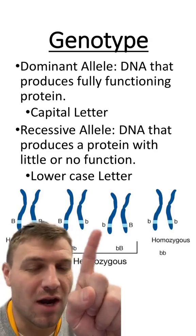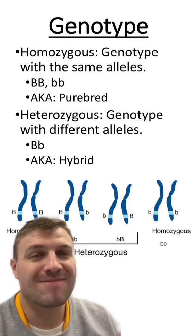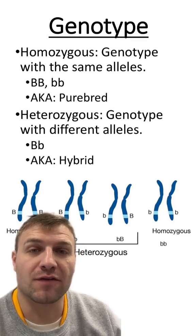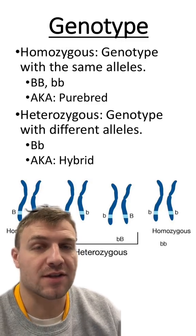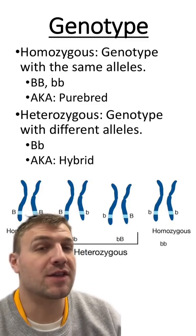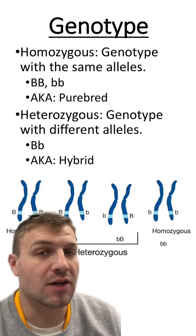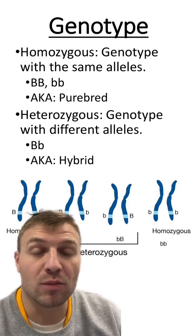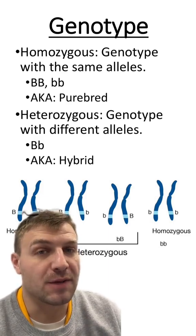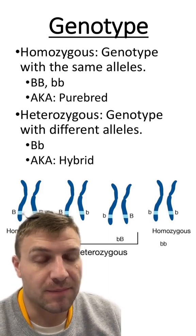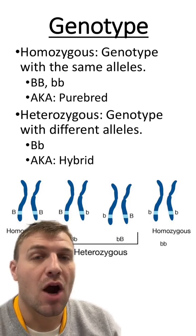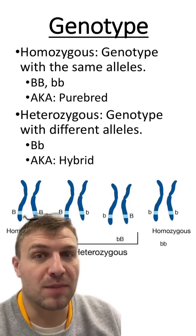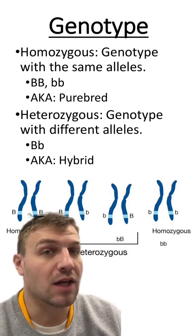We find these alleles on homologous pairs of chromosomes. There are two different types of genotypes when referring to dominant versus recessive alleles. Genotypes with the same alleles are known as homozygous — examples would be capital B, capital B, or lowercase b, lowercase b. Heterozygous genotypes are genotypes in which there are different alleles, an example of which would be capital B, lowercase b.